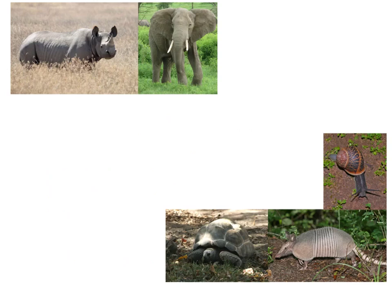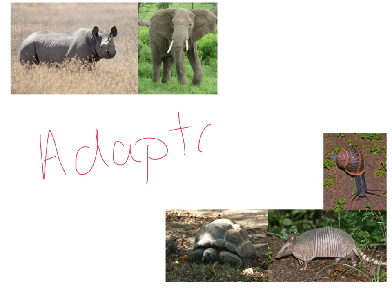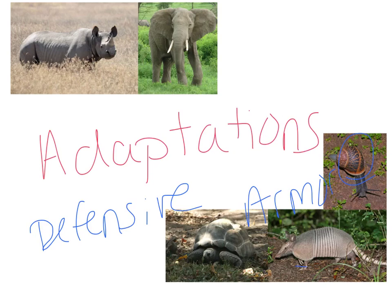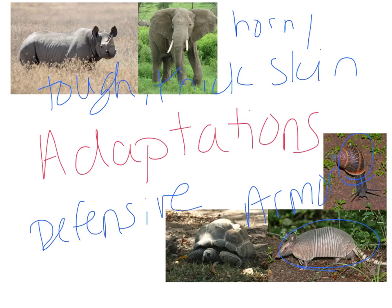Let's look at some adaptations — different variations that would be helpful for different kinds of organisms. First, we're going to look at defensive adaptations, things more for protection. You can see things like armor or shell: the snail has a shell, the armadillo has armor, and the tortoise has a shell. Those all help with defense and make it harder to eat the organism. Things like tough or thick skin, horns or tusks can also act as defensive mechanisms to fend off predators.